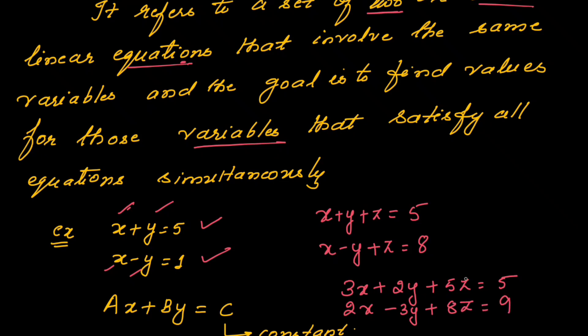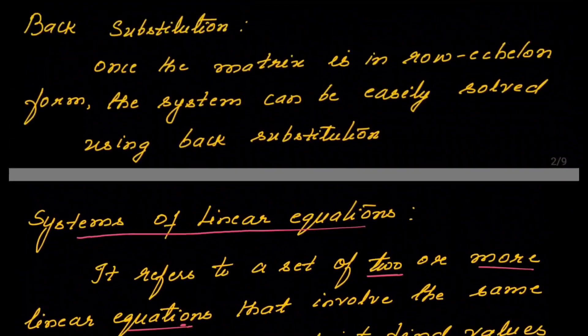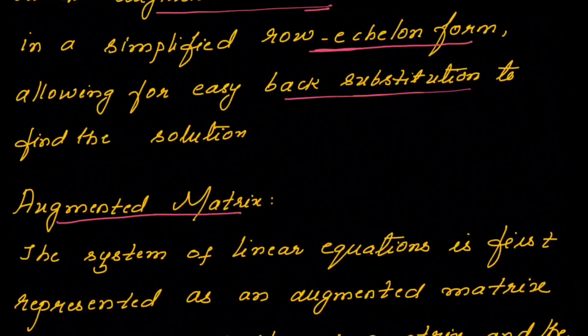Here the numbers 3, 2, 5, 2, minus 3, 8 are the coefficients, and 5 and 9 are the constants. So a linear equation will have variables, coefficients, and constants. The system must have a minimum of two equations, and they should have the same set of variables.